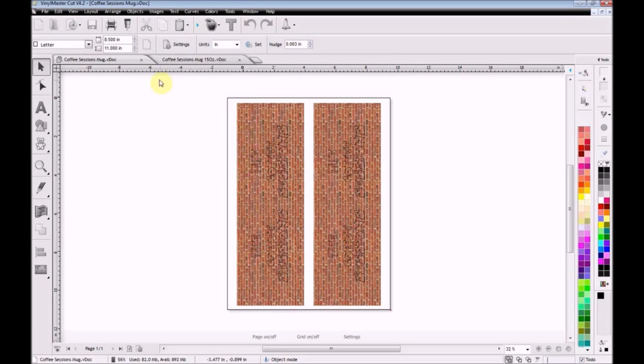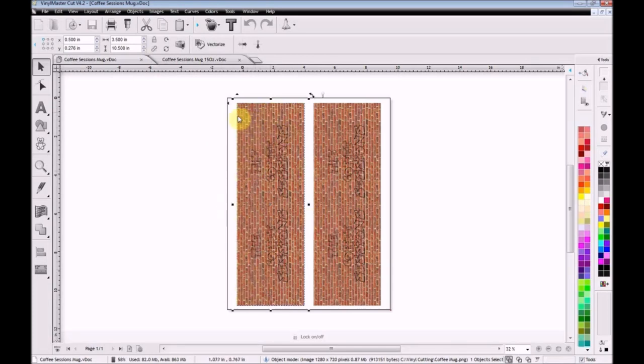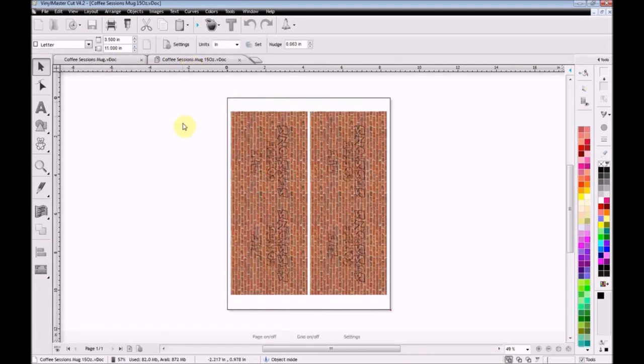If I click on this right here, you can see that these are three and a half inches by ten and a half inches. Actually, I know that when I wrap it around a cup it only goes around there about nine and a half, so I've already done a save as and renamed one for the mugs that are 15 ounces.